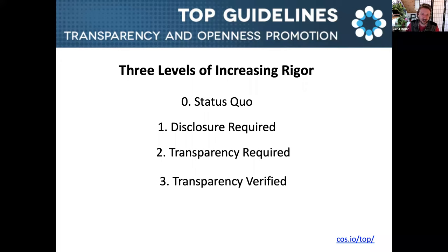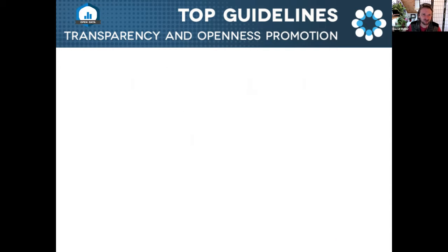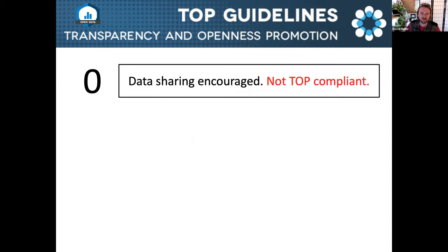Let me give a couple of examples and show some counterexamples. For the open data policy, it starts out with policies that are not compliant with the TOP guidelines — data sharing is merely encouraged if mentioned at all. We know that these are not too effective at seeing the type of open sharing that we want to encourage.